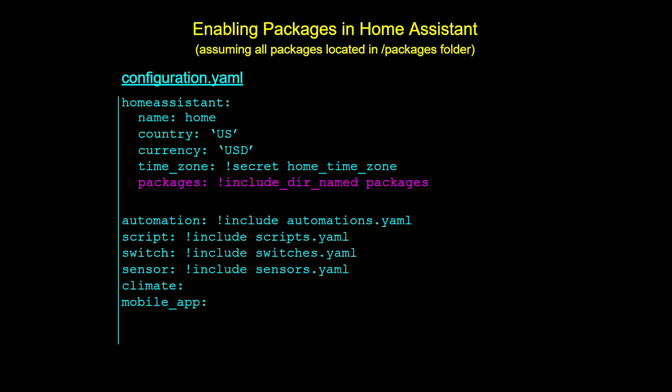Packages are considered dictionaries or mappings, so that's why we're using the 'named' variant — we're saying include a directory of dictionaries or mappings in a folder called packages. There are a couple of key differences in this particular include statement. First, it is actually indented by two spaces. The reason is this is not an actual integration or domain — it's telling Home Assistant that you want to use packages as part of the Home Assistant configuration. If you make it fully left-justified like your other include statements, it will not work. The other difference is that 'packages' is plural, while other integrations are singular — like switch instead of switches, or sensor instead of sensors.